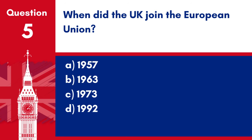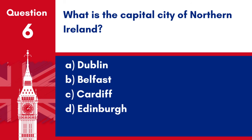Question 5. When did the UK join the European Union? a. 1957. b. 1963. c. 1973. d. 1992. Answer: c. 1973. The UK joined the European Union in 1973.